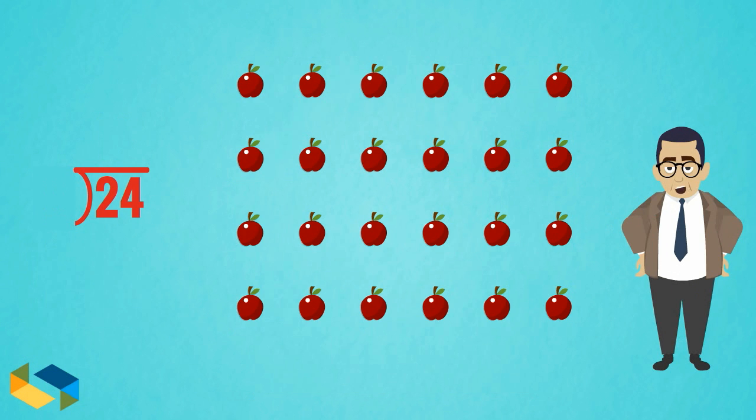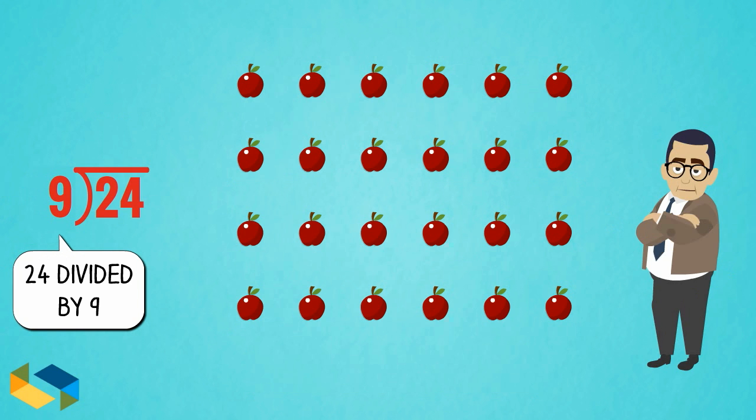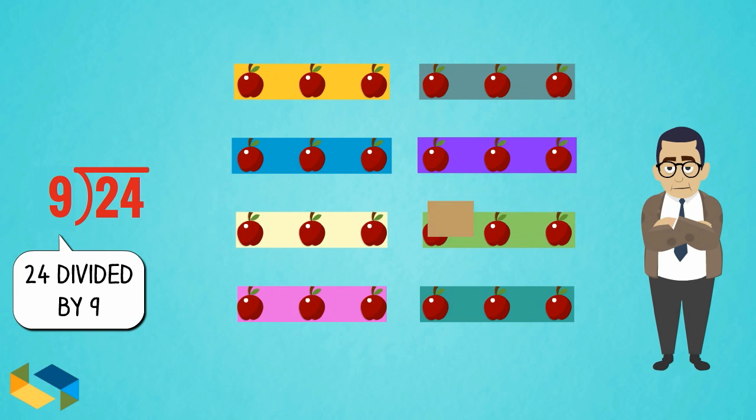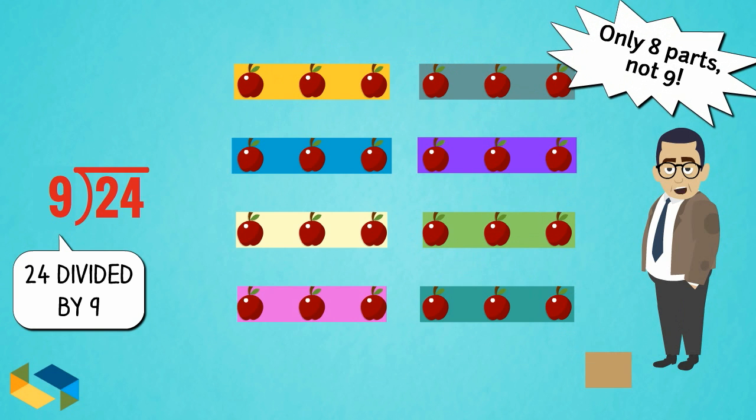Now, let's look at 24 divided by 9. Hmm, let's see. With 3 apples in each, we can make 8 groups.